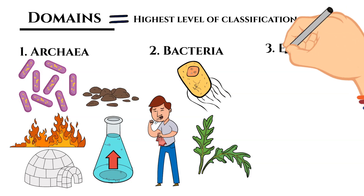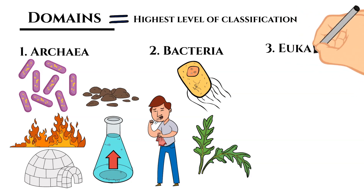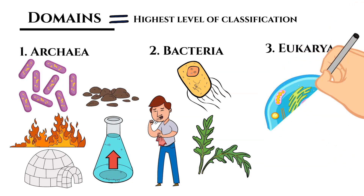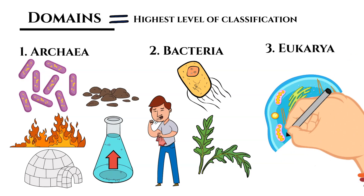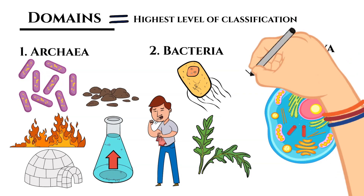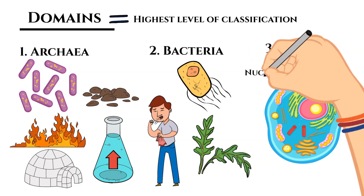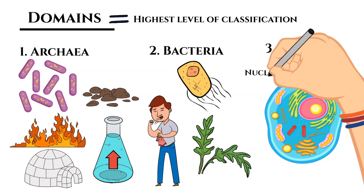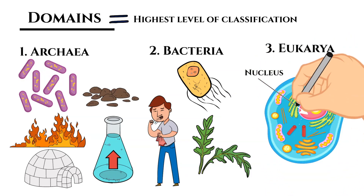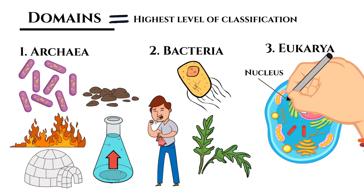The third domain is called Eukarya. These are all organisms that have a nucleus in their cell. Organisms in Archaea and Bacteria do not have a true nucleus. If you are looking at a cell that has a nucleus, it belongs in this third domain, Eukarya.